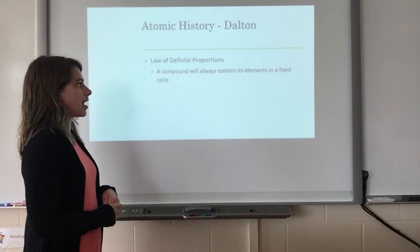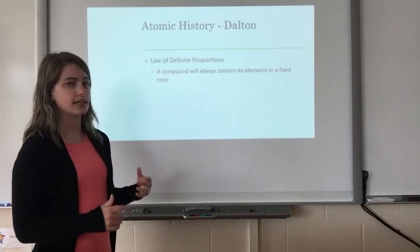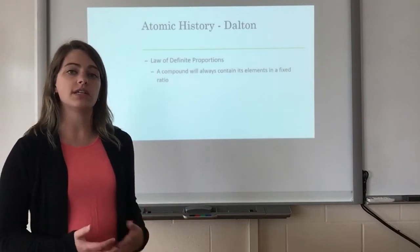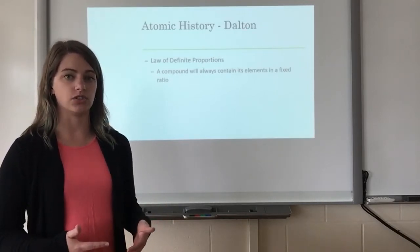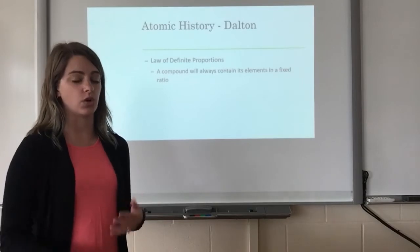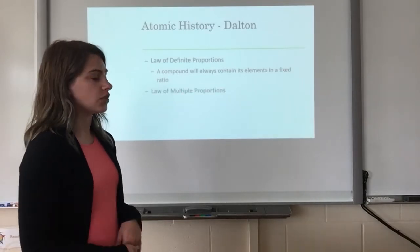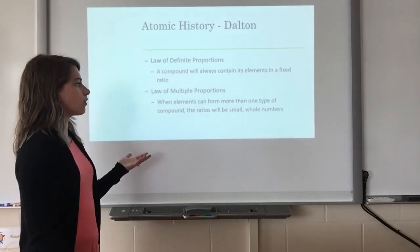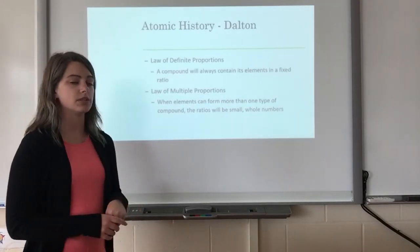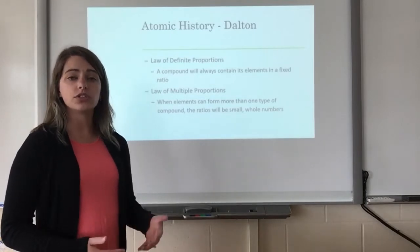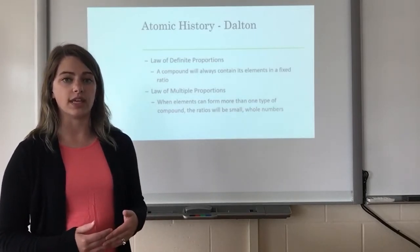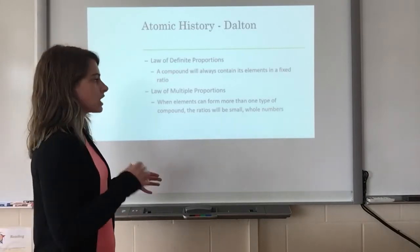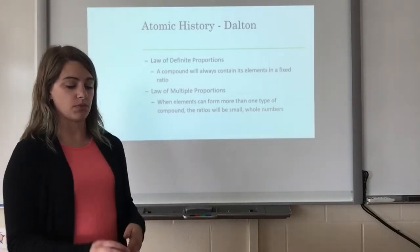The law of definite proportions tells us that a compound will always contain its elements in a fixed ratio. For example, water will always have two hydrogens and one oxygen — if it doesn't, it's no longer water. The law of multiple proportions tells us that elements can form more than one type of compound, and those ratios will be small whole numbers. You're never going to see a chemical formula with decimals or fractions because elements combine in small whole numbers.